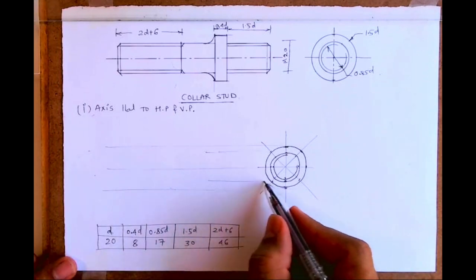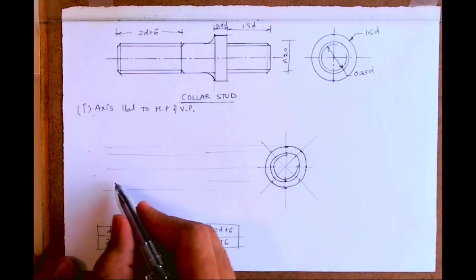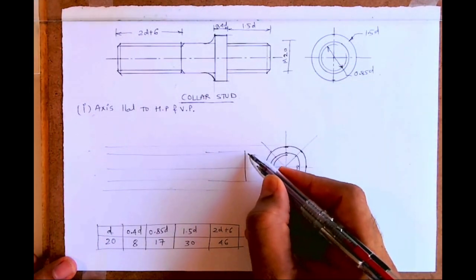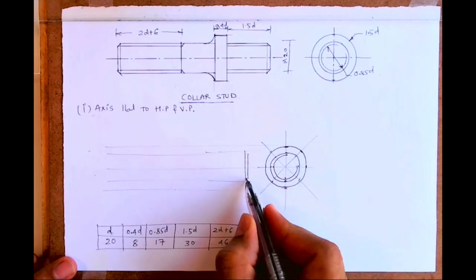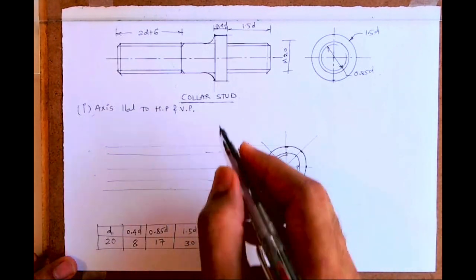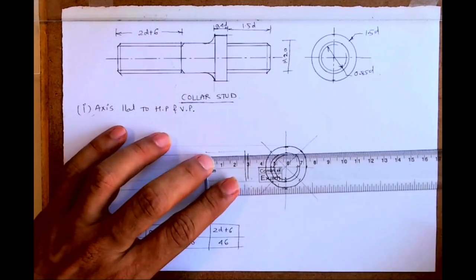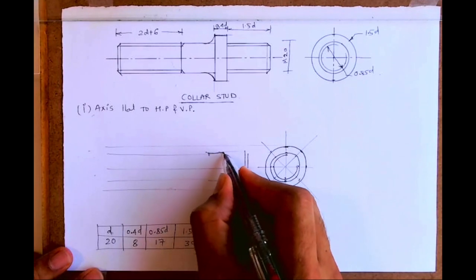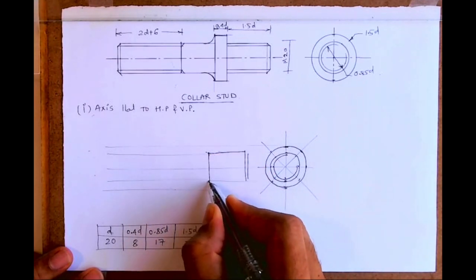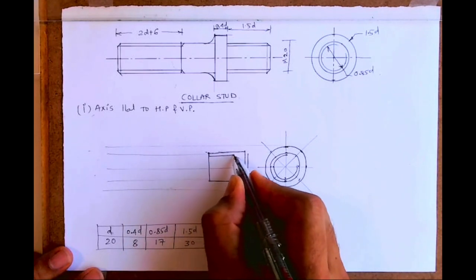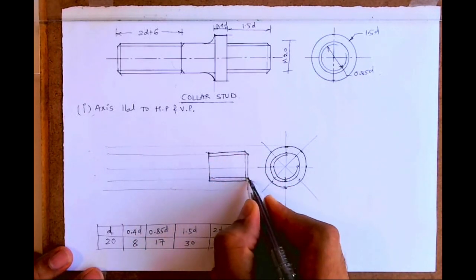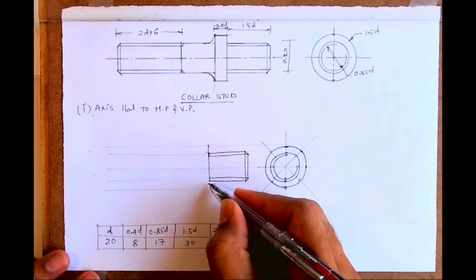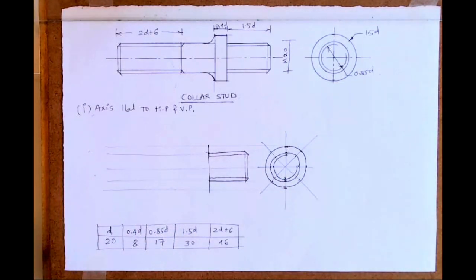Now we project this. We take D, that is 20. This is 0.85D. Now we have 1.5D, so this is the threaded portion. We'll show it like this. Then point 4-0, that is 8mm.